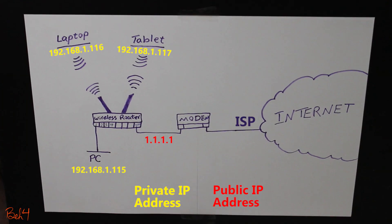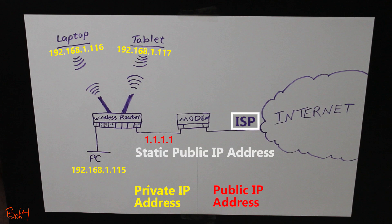The public IP address that the ISP assigns to each home internet connection is usually a dynamic IP address, which means it can change from time to time. There are some cases where we might need an IP address that doesn't change, such as running a web server. This is called a static public IP address and can be purchased from the ISP.